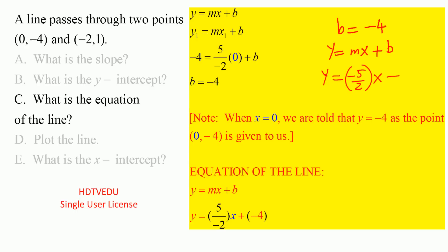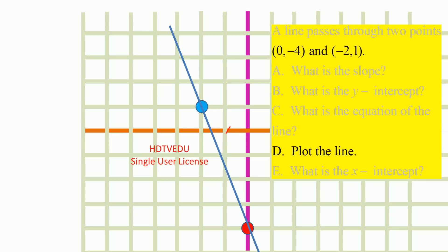Substitute for m, leave x as it is, and substitute for b. We get y equals -5/2·x plus (-4), or y equals -5/2·x minus 4. To plot the line: x = -2 gives y = 1, so the point is (-2, 1), and (0, -4) is the y-intercept. The slope is -5/2: for every two steps to the right, you go down five.